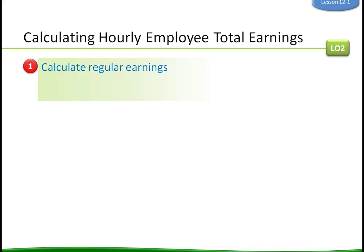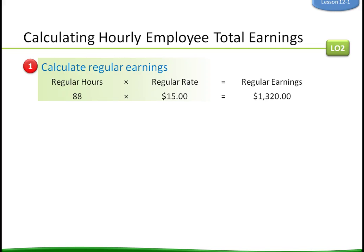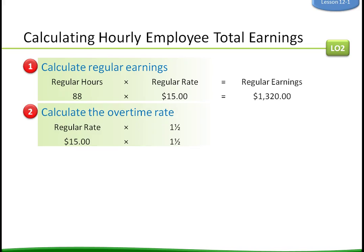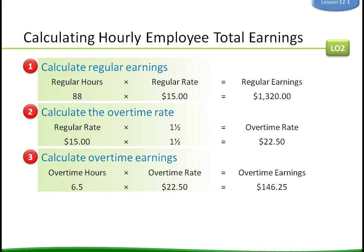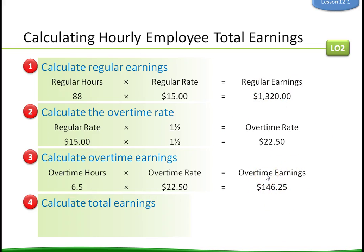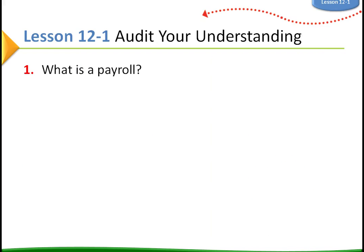To calculate employee total earnings, we calculate regular earnings first — regular hours times the regular rate. For overtime, there were six and a half hours. They're making time and a half, so fifteen dollars times 1.5 equals twenty-two dollars and fifty cents as the overtime rate. Six and a half hours times $22.50 equals $146.25 in overtime earnings. Then add regular earnings and overtime earnings together for total earnings.